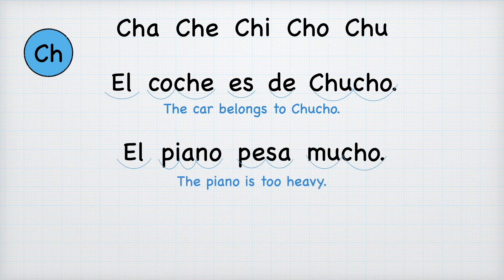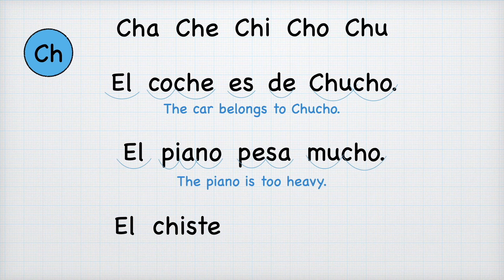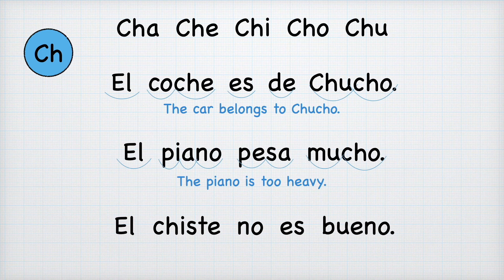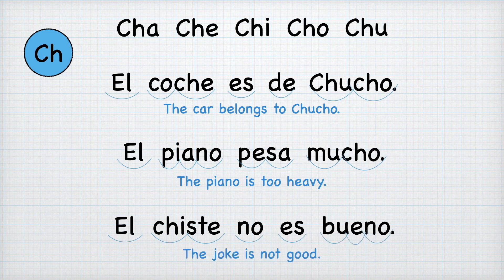And the last sentence starts with el again. Che-i: chi, and then we're going to add the s sound — chis. T-e: te. Chis-te — chiste. No, n-o. E-s: es. B-u: bu, e, n-o — bueno. El chiste no es bueno. El chiste no es bueno. It means the joke is not good.